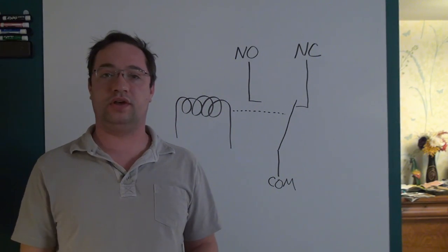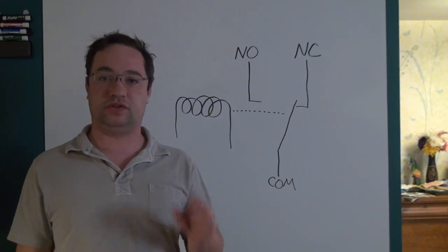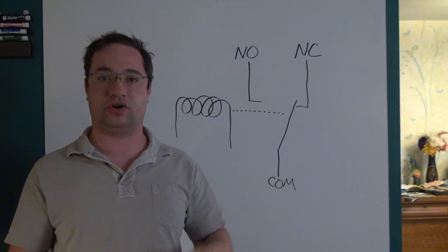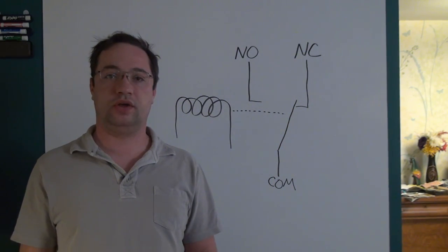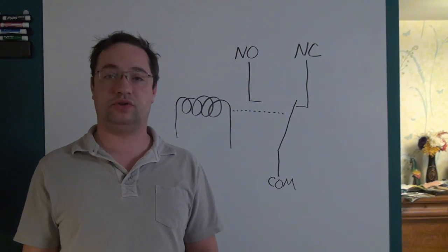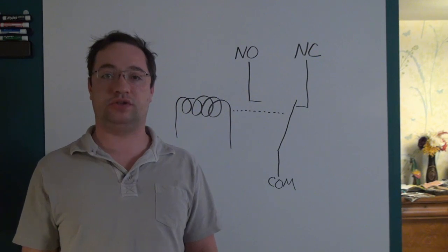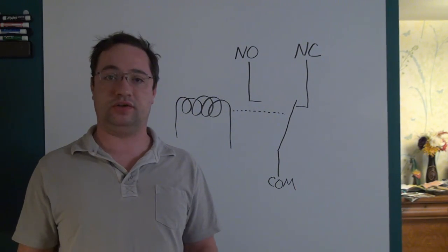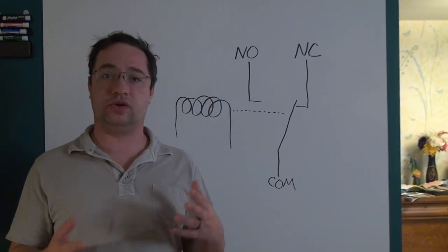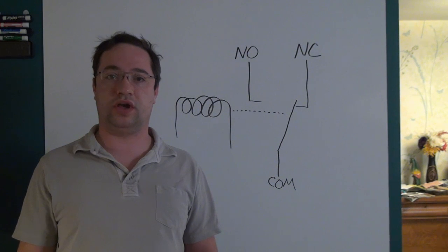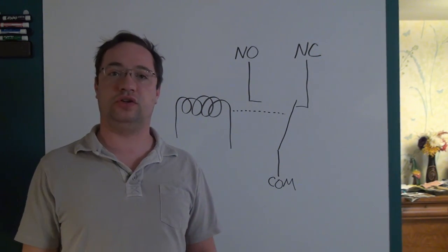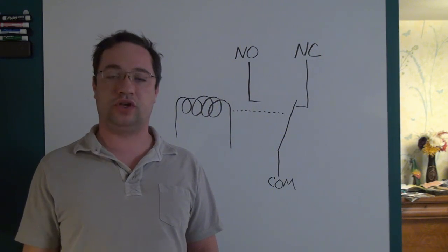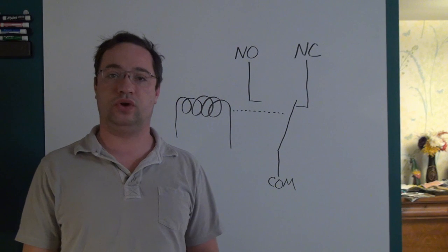A relay is an electromechanical device that allows the use of a small current to switch a very large current. One way to think about a relay is as a precursor to a bipolar junction transistor or a MOSFET, but only in the digital sense, because relays can't do any kind of amplification. Relays only switch on or off, but they are capable of doing digital logic.